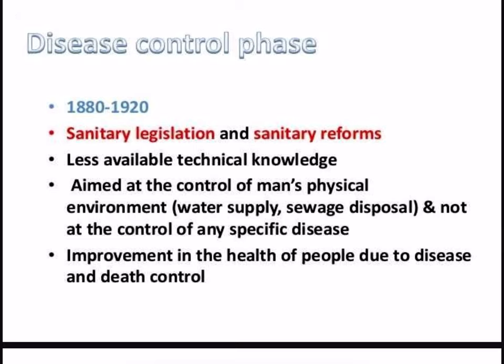The disease control phase spanned from 1880 to 1920. In this phase, sanitary legislation and the sanitary reform movement took place. Although there was less technical knowledge available, the aim was to control man's physical environment — such as water supply, sewage disposal — and not at the control of any specific disease. Improvement in the health of people due to disease and death control can be seen during this phase.